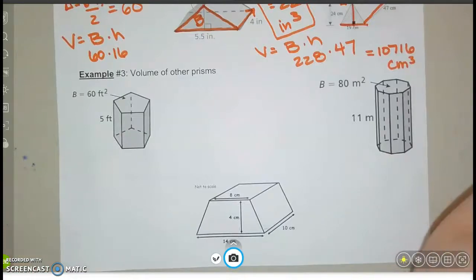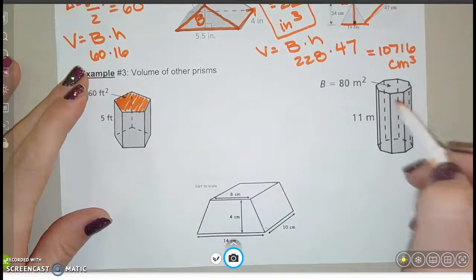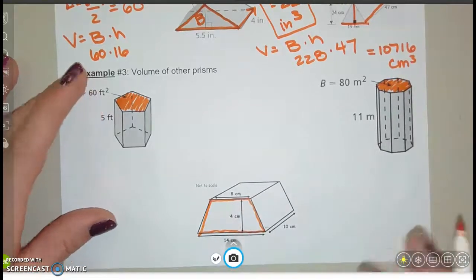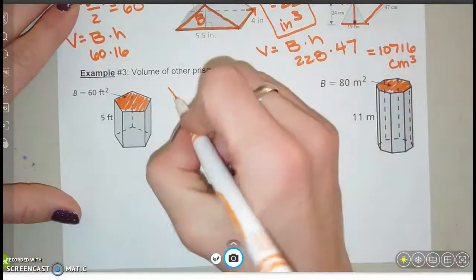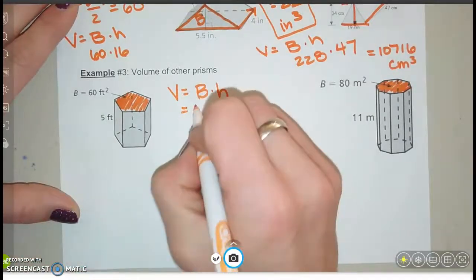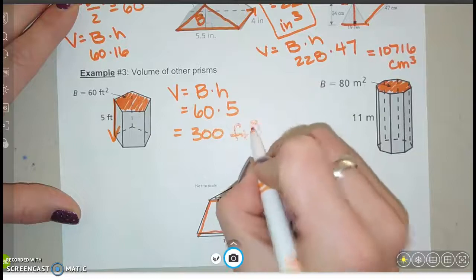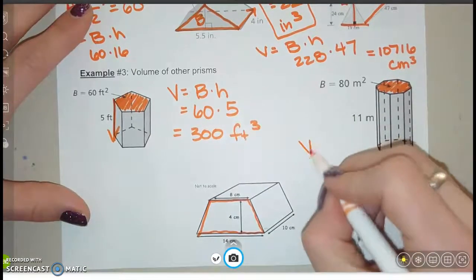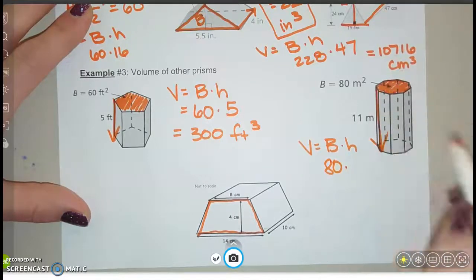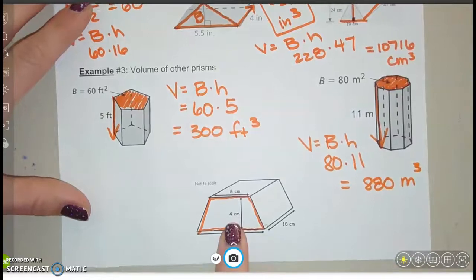What if we're asked to find the volume of a different kind of prism? Looking at these examples, the base could be a pentagon, an octagon, or a trapezoid — we can still find the volume. For the pentagon prism, they're giving us the area of the base: capital B is 60, times a height of 5, giving 300 cubic feet. For the octagon prism, capital B is 80, times a height of 11, giving a volume of 880 cubic meters.